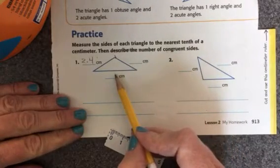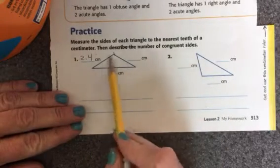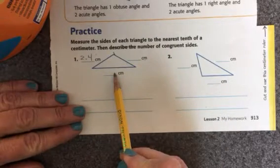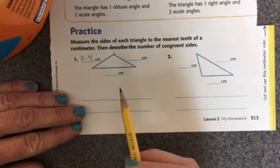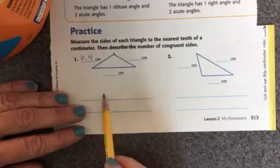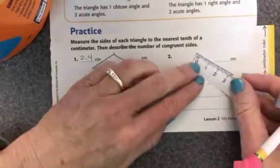You'll measure the other sides as well. Then after you measure the sides, you need to count how many congruent sides there are. And remember, congruent sides are the same length. So you'll just write down the number.